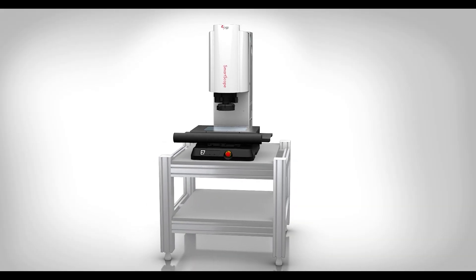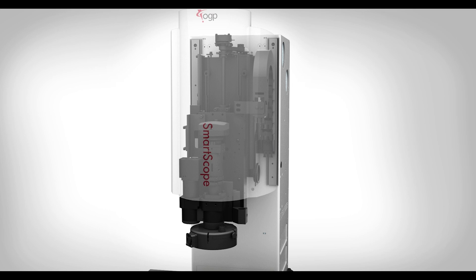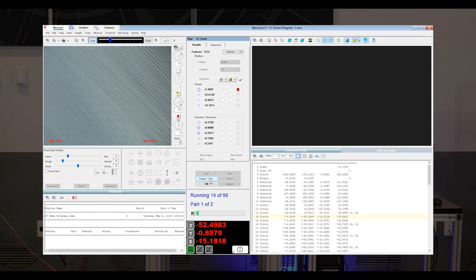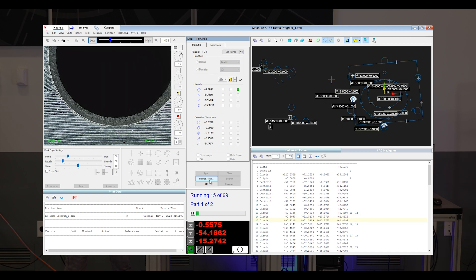SmartScope E-Series systems feature the all-new IntelliCentric Optical System from OGP. This new optical system is built with advanced camera technology and trusted OGP image processing, resulting in an extremely crisp image.